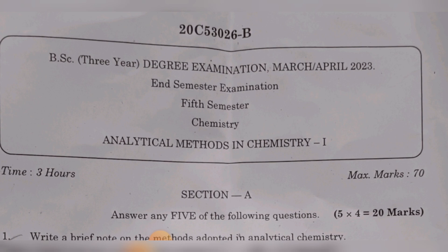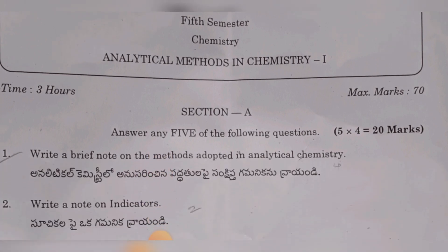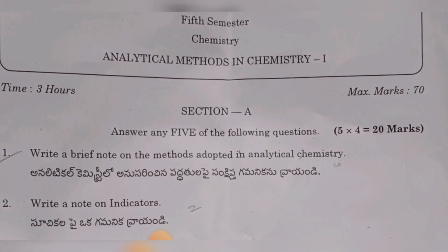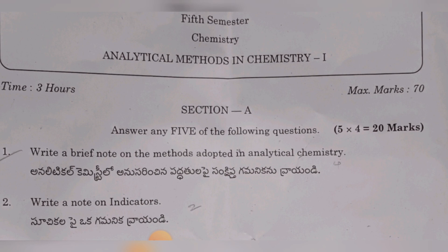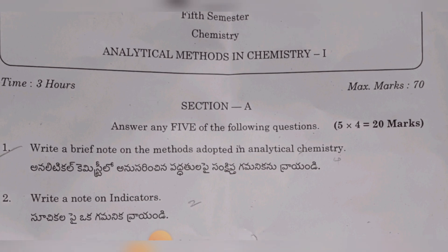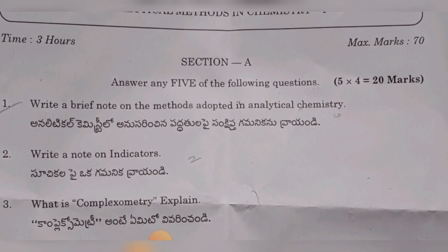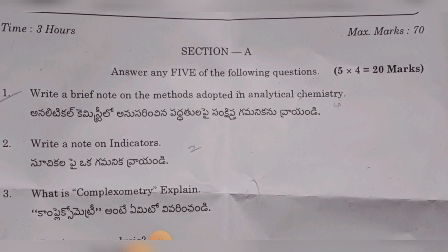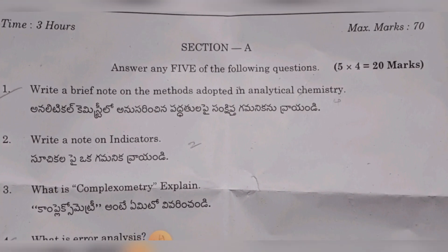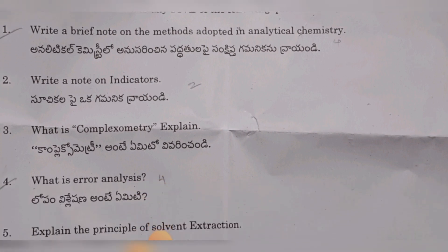Let's look at the short answer questions. First: write a brief note on the methods adopted in analytical chemistry. Second: write a note on indicators. Third: what is complexometry? Explain complexometry and its types.